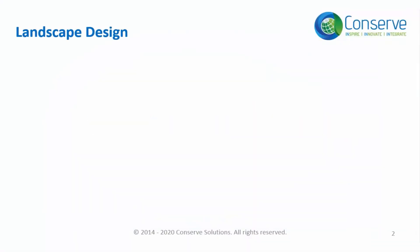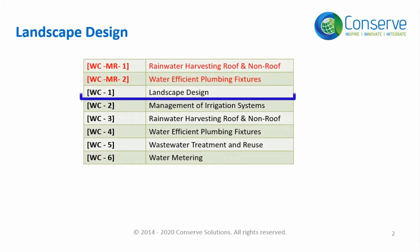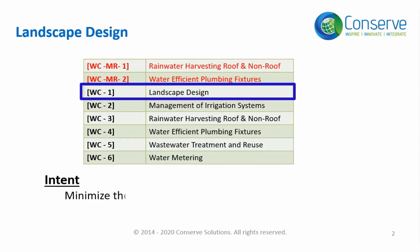Water Conservation Credit 1 is all about designing the landscape with the right type of plants. The intent or objective of this credit is to design the landscape with minimum water requirement by selection of proper plants.